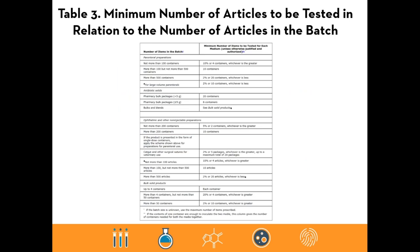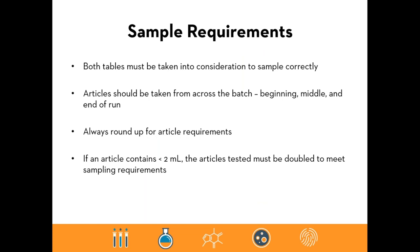Table three specifies the minimum number of articles to be tested relative to the total number of articles in the batch — for pharmacies this is the most commonly used table. The left column groups batch sizes, and the right column gives either a percentage or flat number of articles that must be tested for a valid sterility test. Both tables must be taken into consideration when sampling. It's generally good practice to sample across the batch — some from the beginning, middle, and end of a run.